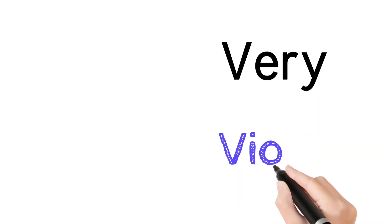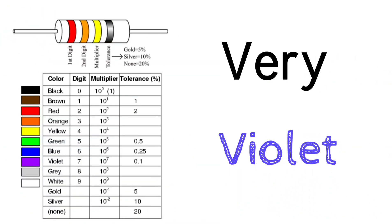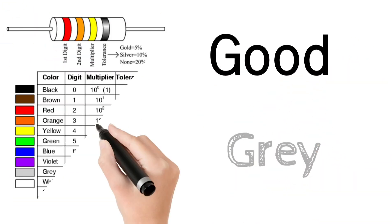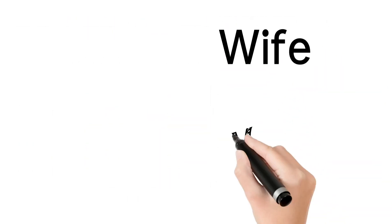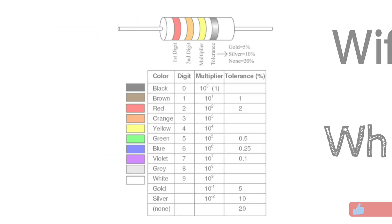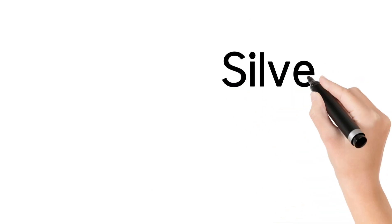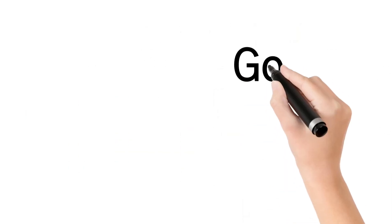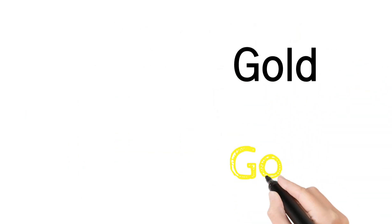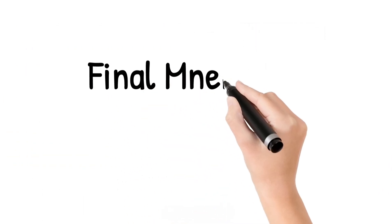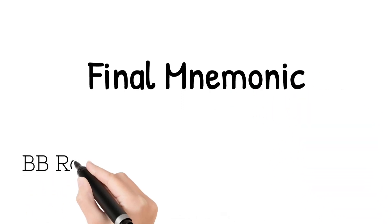The next part, very, represents violet. The next part, good, represents gray. The next part, wife, represents white. The next part, silver, represents silver. The next part, gold, represents gold. So the final mnemonic can be stated as: BB ROY of Great Britain Has Very Good Wife with Silver and Gold.